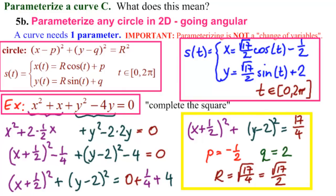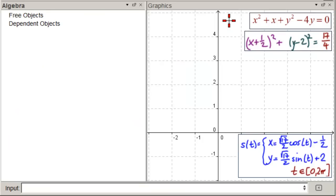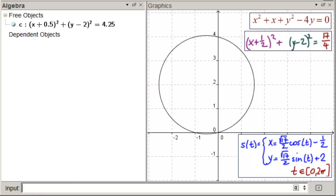Let's check it. So, the first one here is the original implicit function. Then, this is where we completed the square. And this is our parameterization. And we should get three copies of the same circle. Let's go for it. Click down here in the input bar. And we'll put our first one in, which is x² + x + y² - 4y = 0. Hit enter. There's our first circle.